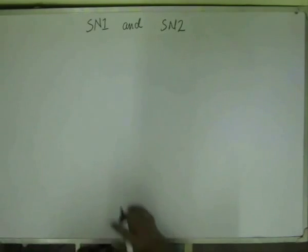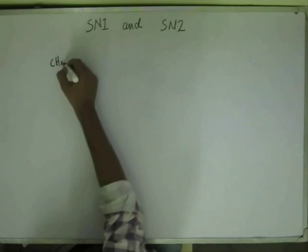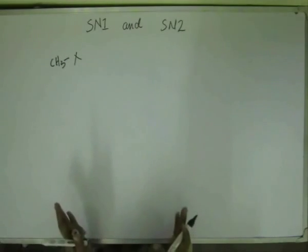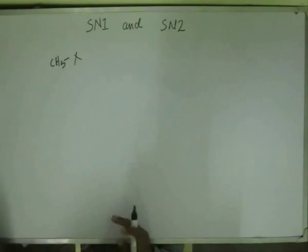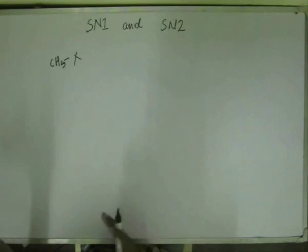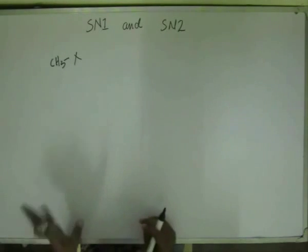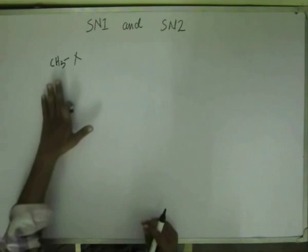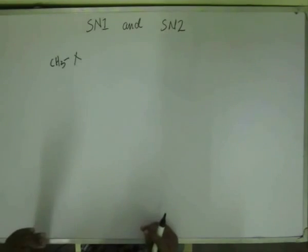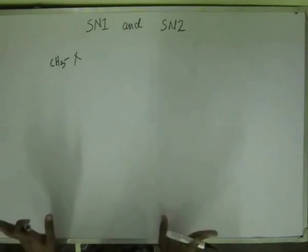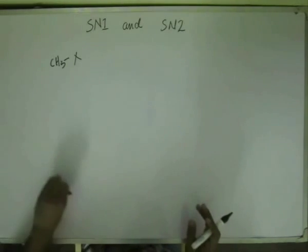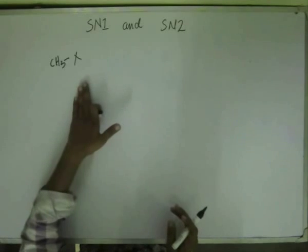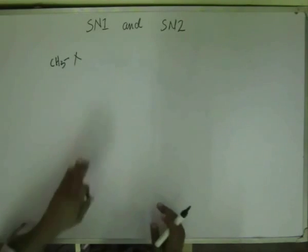If we have a primary (1°) alkyl halide, SN1 is not possible because the carbocation formed would be zero degree. There will be no effects operating to stabilize that 0° carbocation — no resonance, no aromaticity, no hyperconjugation, no inductive effect, no hydrogen bonding — nothing. So it would be too unstable to form even at elevated temperature.